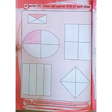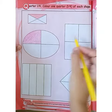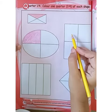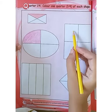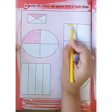Move on to the next one. This is a rectangle shape and we also have to color the quarter of this shape. Color it. Students, color it very carefully.